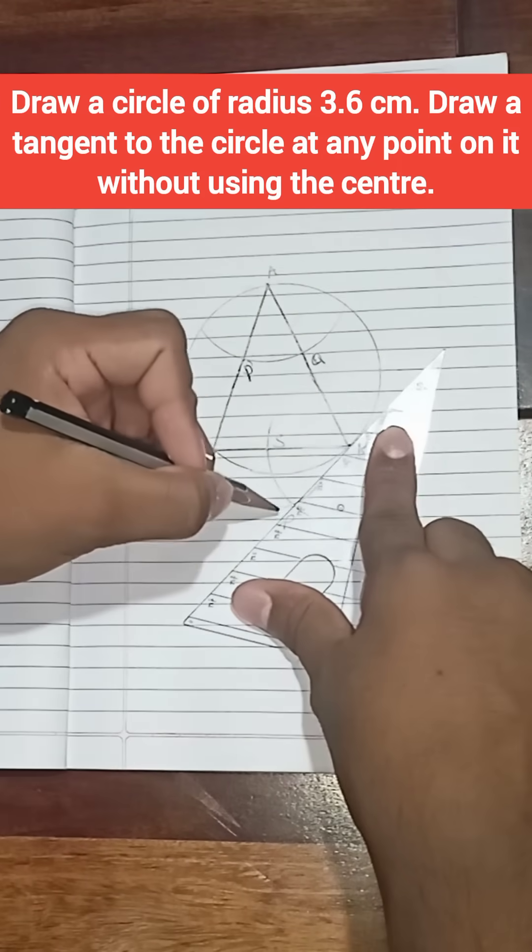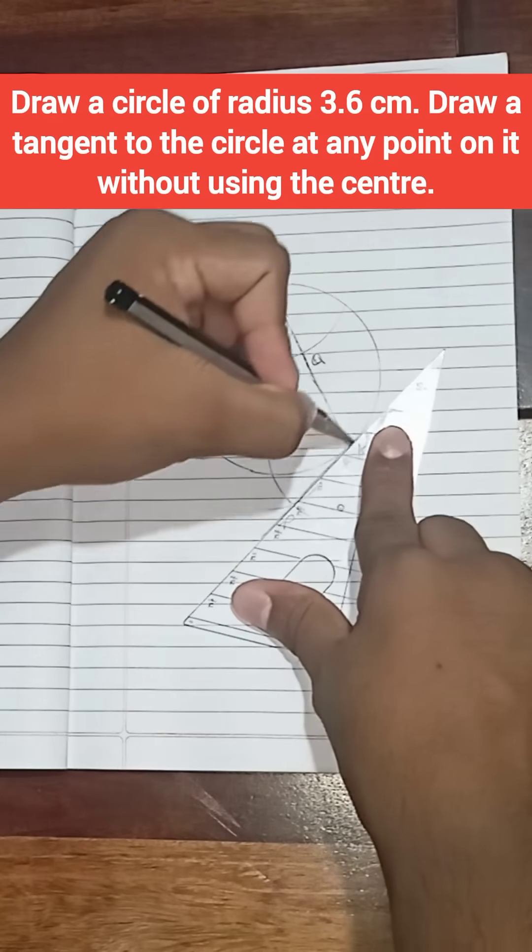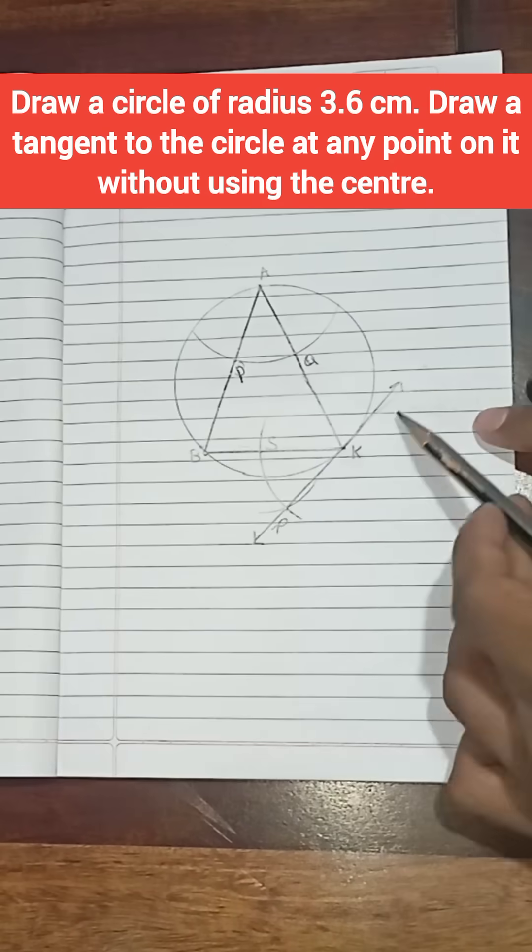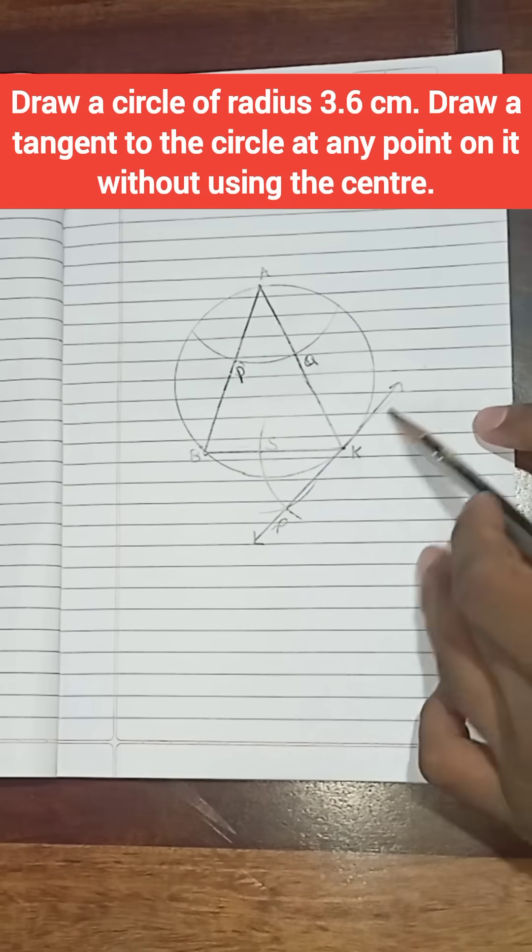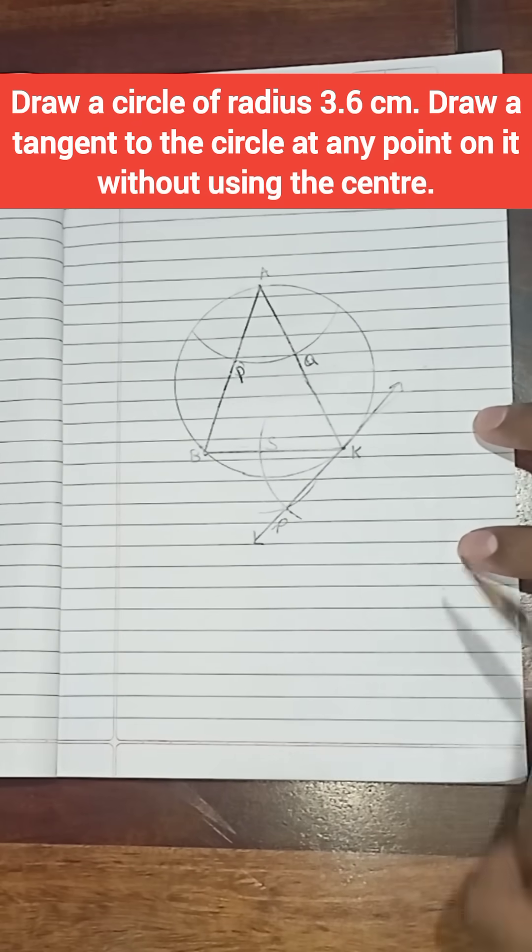Now draw a tangent line from R to K. So now we have learned how to make a tangent line without using the center of the circle.